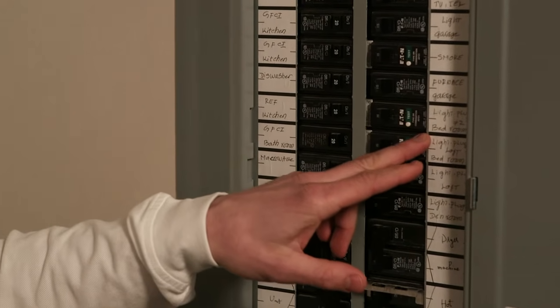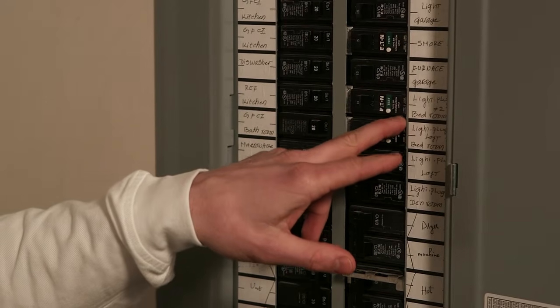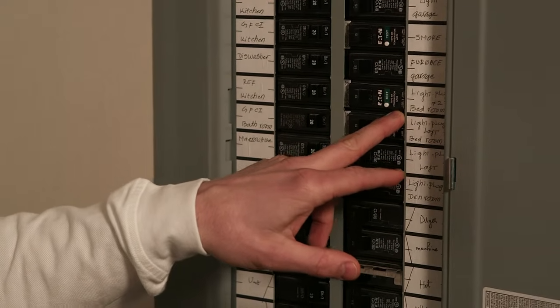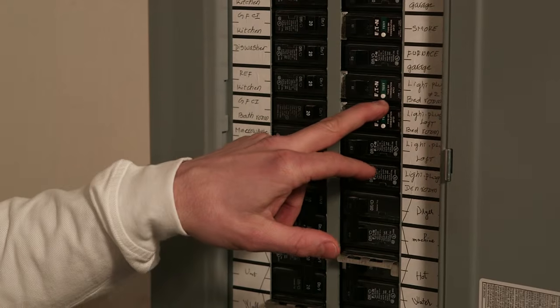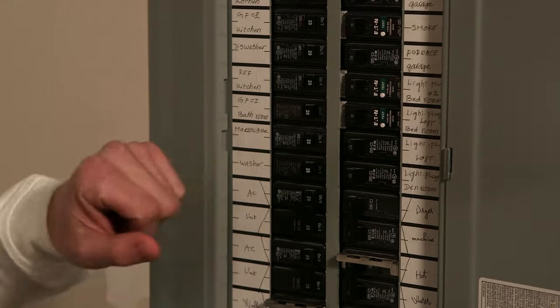Now in your bedrooms we have this, which is called an arc fault breaker. It's a little bit more sensitive, a little different, and it has a test button here which is very similar to the GFCI outlets.